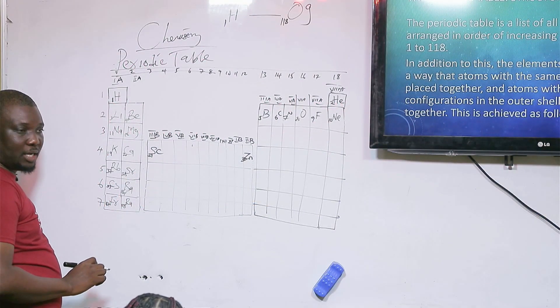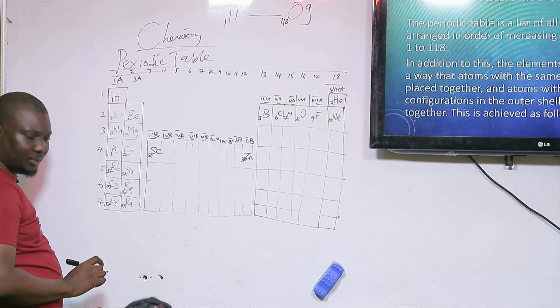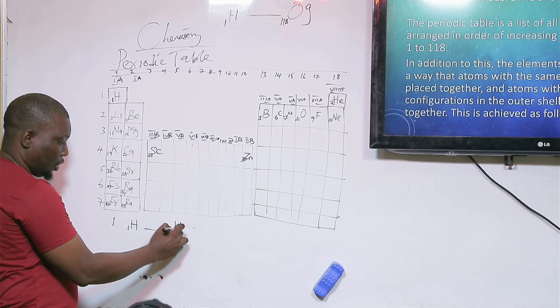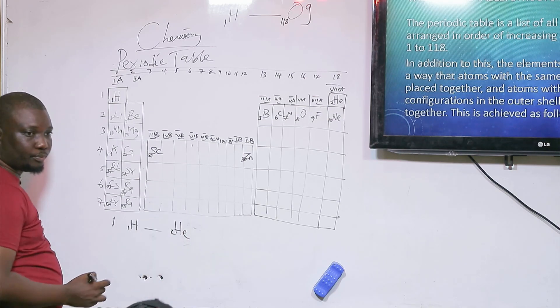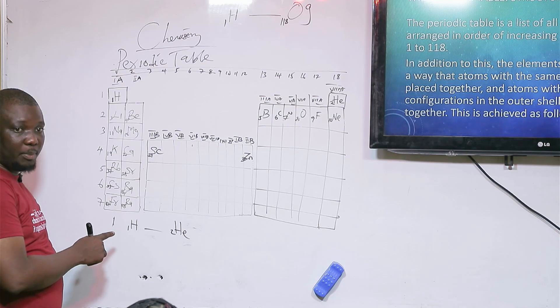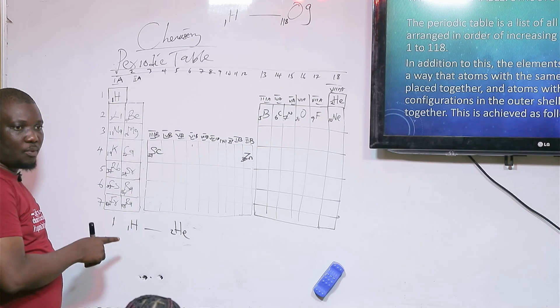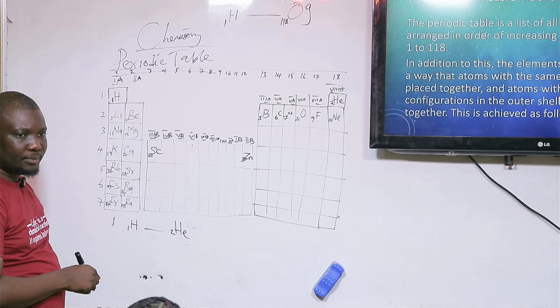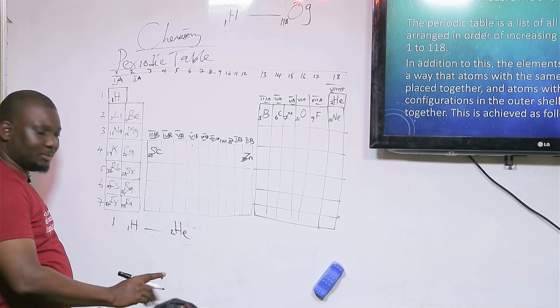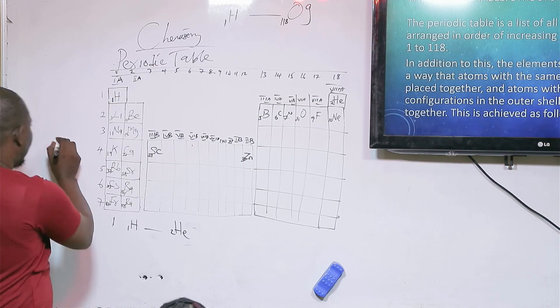In period 1, we only have hydrogen with atomic number 1 and helium with atomic number 2. Why are they period 1 elements? Because the number of shells here and here are the same. They just have one shell, the K shell. They are all K shell elements.